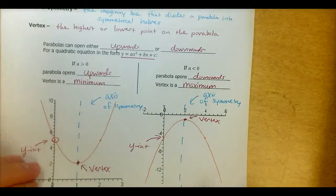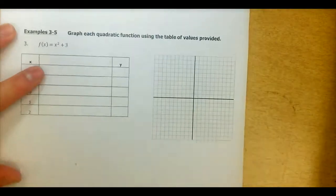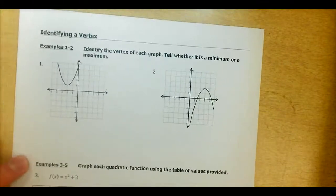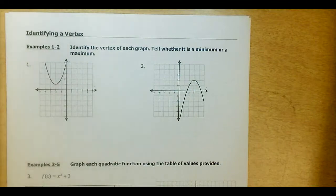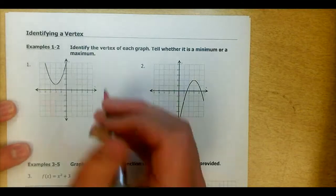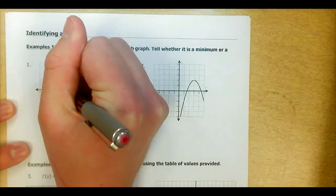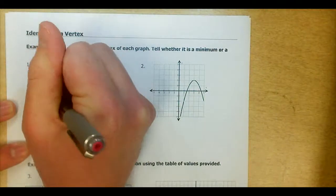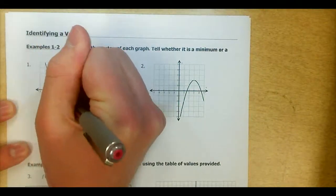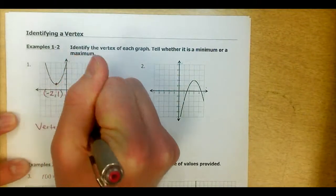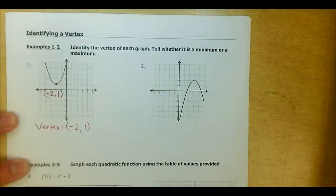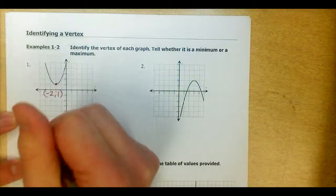The first thing I want to look at in this lesson is how to identify a vertex. If you'll flip over the page, I've given you two graphs in examples 1 and 2. We're going to identify the vertex using an ordered pair and then tell whether it's a maximum or minimum. In number 1, the vertex is this point right here: negative 2, positive 1. It's the lowest point on the graph, so that vertex is a minimum.